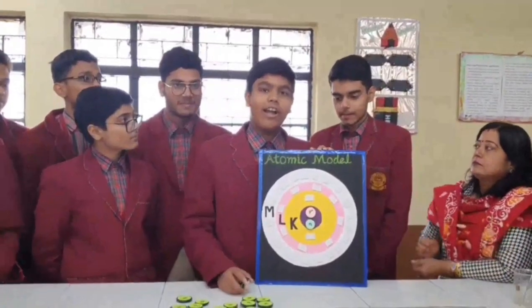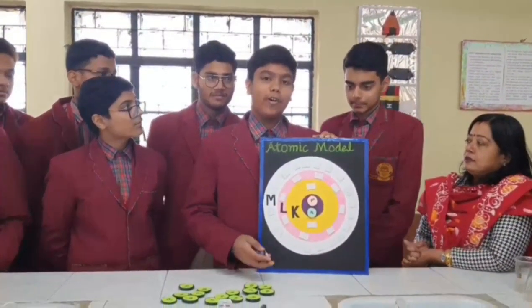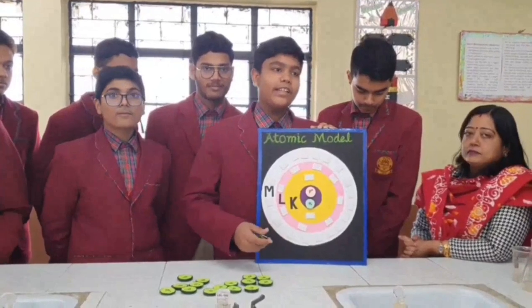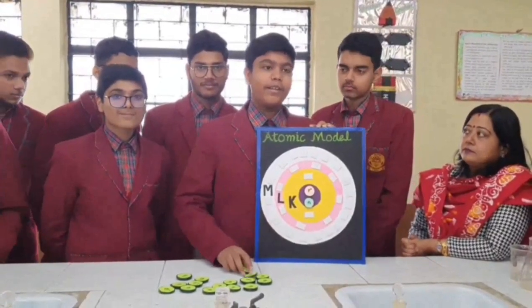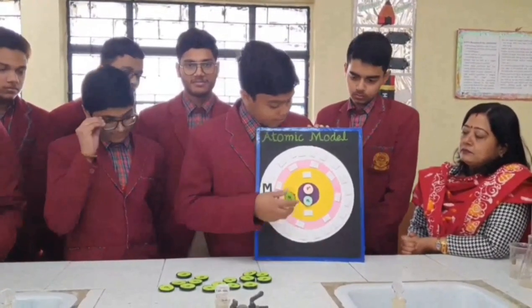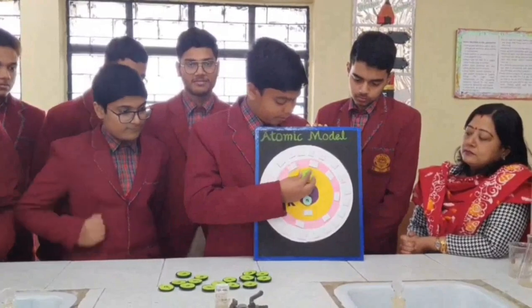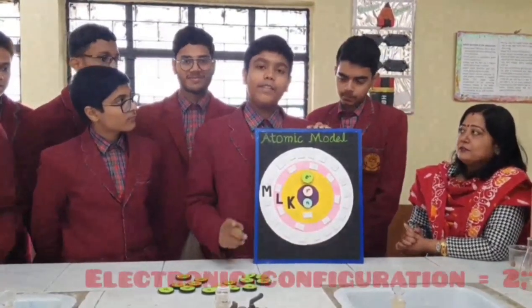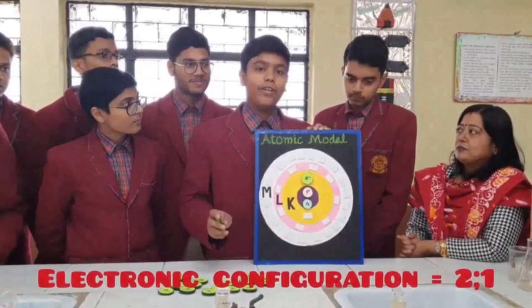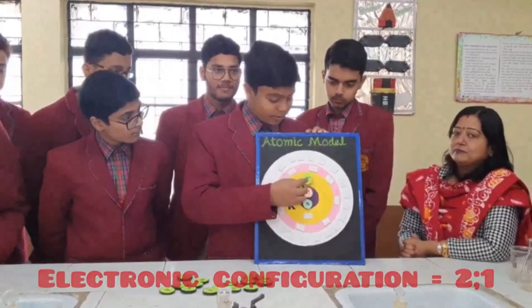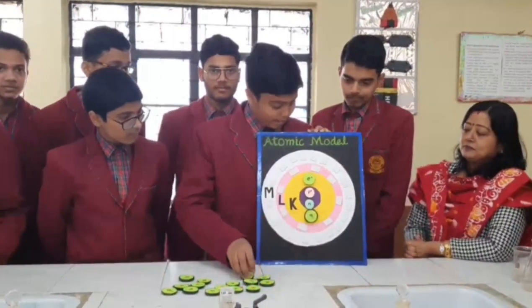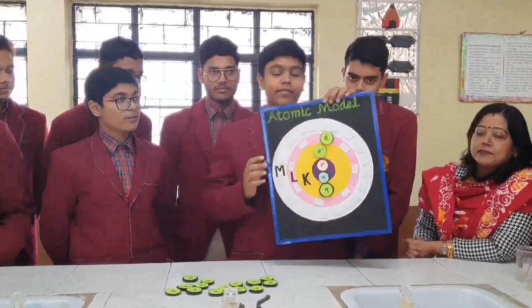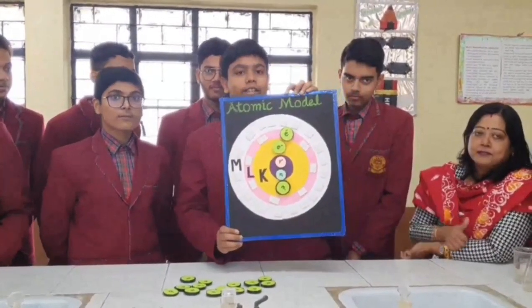Hello guys, now I am showing you the atomic model of lithium. As we know that lithium has atomic number 3. The electronic configuration of lithium is 2.1. So in the first shell we put 2 electrons, and in the second shell we put 1 electron. This is the electronic configuration of lithium.